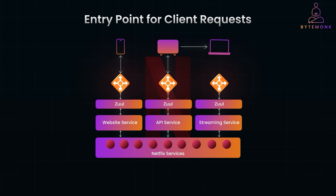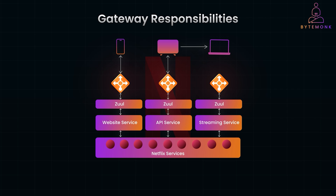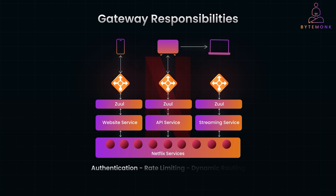When you open the Netflix application on your phone, TV, or laptop and request a show, the request doesn't directly hit a microservice deep inside the Netflix ecosystem. Instead, it goes to the edge — a set of services that form a perimeter around the internal architecture. Zuul, both version V1 and V2, served as a reverse proxy, routing and filtering all incoming traffic. It was placed at the edge of Netflix's cloud infrastructure, effectively operating as the front door to Netflix's internal services. This setup allowed Netflix to manage cross-cutting concerns like authentication, rate limiting, and dynamic routing at a single entry point.